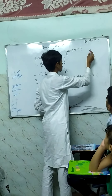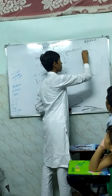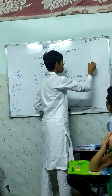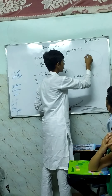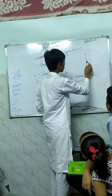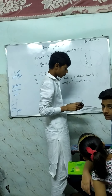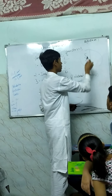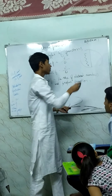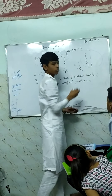I will give you one example of fractions. Like, this is one chapati and it is divided into two parts. It has two parts — one is colored and one is unbaked. Half is baked and half is unbaked, like one of two.